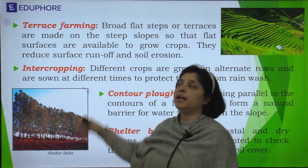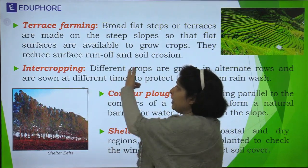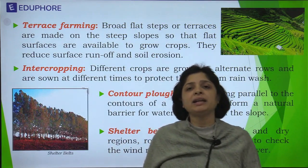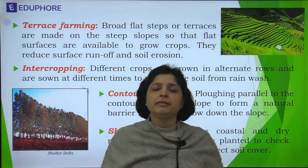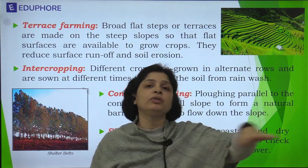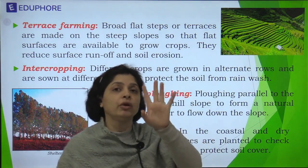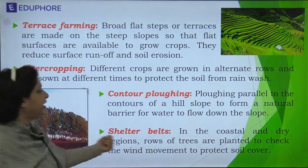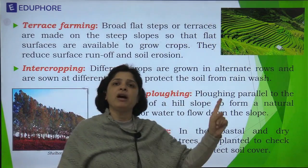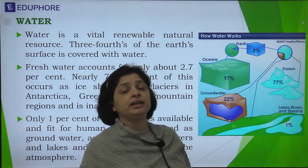Inter-cropping involves growing two types of crops in parallel — one fast-maturing and one slow-maturing. By the time the fast-maturing crop is ready for harvest, the slow-maturing crop has spread enough to cover the full soil, protecting it from wind and water. Shelter belts involve planting trees along the boundary of the farm so that wind velocity is broken. These are the different means by which we can protect the soil.